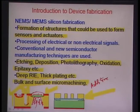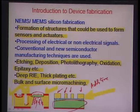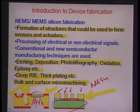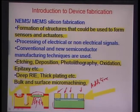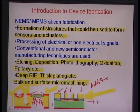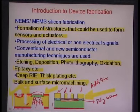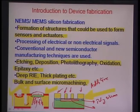Surface micromachining is an additive process where material is built on the surface of silicon. Pillars are built on top of a base wafer. Another interesting example is a small embedded micro channel: a sacrificial resist layer is spin-coated, polysilicon is deposited on top, and then the sacrificial material is removed, leaving a small covered micro channel — this is also a surface micromachining process.